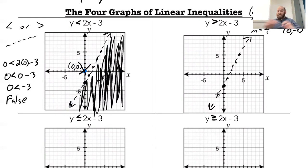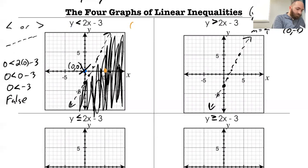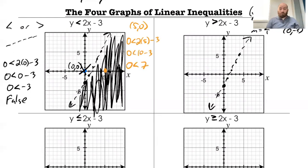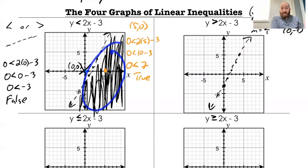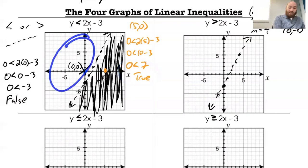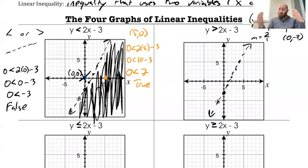Any point that I pick out of that shaded region will work for this. For example, if I pick right here, (5, 0): I get 0 less than 2 times 5 minus 3 — that's 0 less than 10 minus 3, so 0 less than 7. That works, that's true. That's what all of these represent. Any point in that shaded region — and it's a dashed line so it cannot be on the line itself — I'm going to get a true statement. Anything in the non-shaded region is going to come out to a false statement.